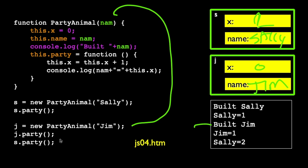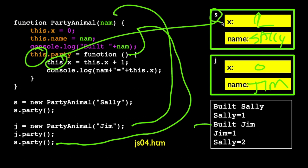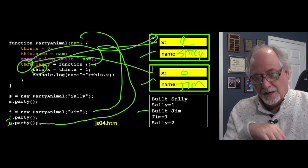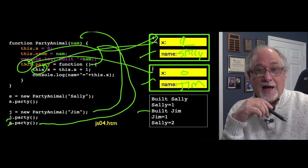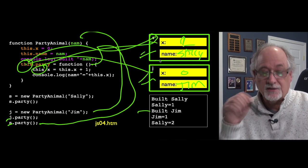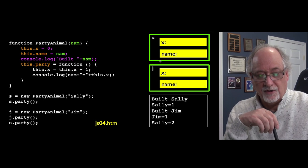And then we're going to call s.party here at the very end. So it's going to run this party code again, except now this is an alias of s. So you can see how when we call j.party, this is an alias of j. And when we call s.party, this is an alias of s. These are instance, instance. So s is one instance and j is another instance of it. And so that's how we take one class and make multiple instances. And each instance has their own independent copy of the variables.